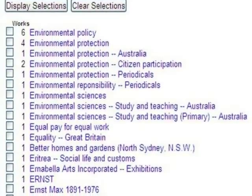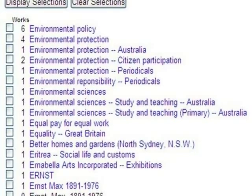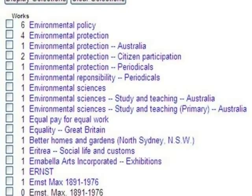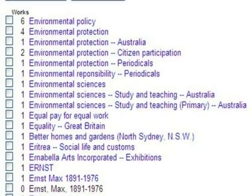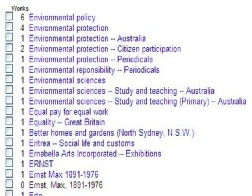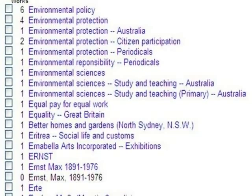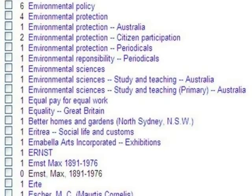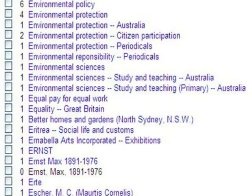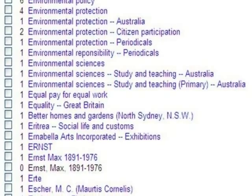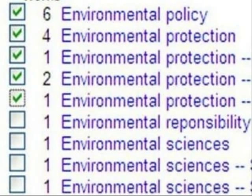You'll now see a new list of keywords. The first 9 or 10 still relate to global warming. I want to find all the resources Mount Gambier Library has about environmental policy and I'll add environmental protection. So I'll tick the first 5 boxes and then click Display Selections.